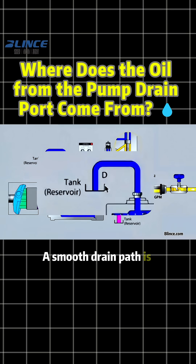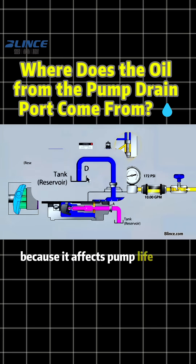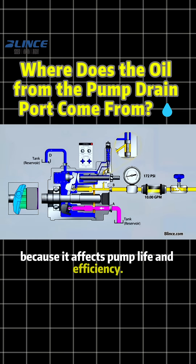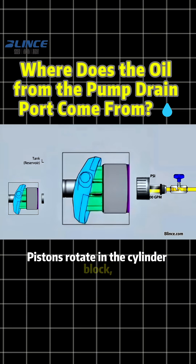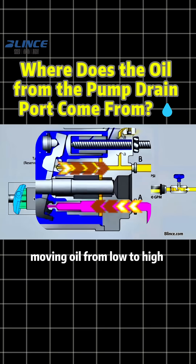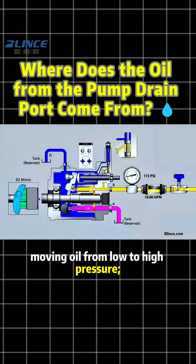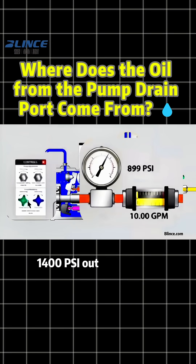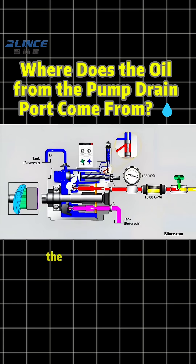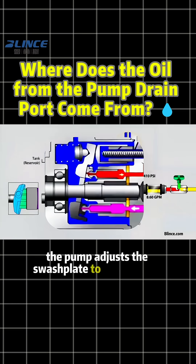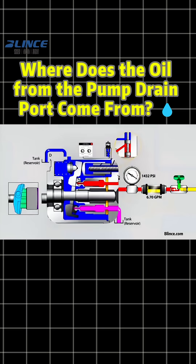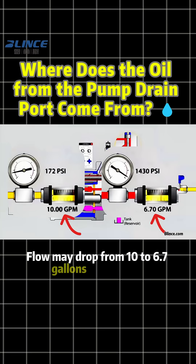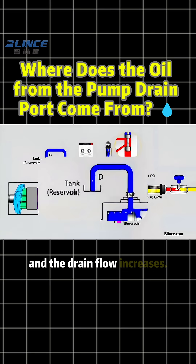A smooth drain path is important because it affects pump life and efficiency. Pistons rotate in the cylinder block, moving oil from low to high pressure. When system pressure approaches the pump's cutoff — for example, 1400 psi out of 1500 psi — the pump adjusts the swash plate to reduce flow. Flow may drop from 10 to 6.7 gallons per minute, and the drain flow increases.